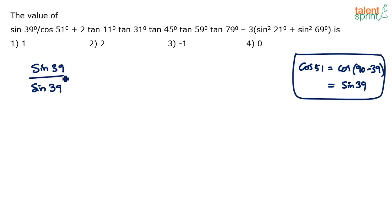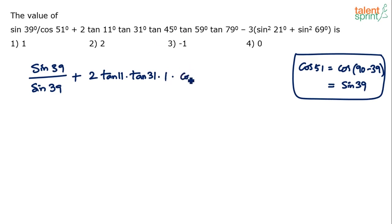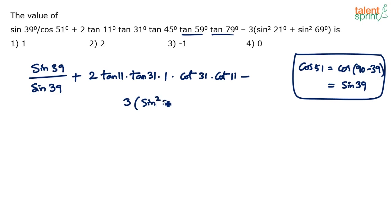You should do this conversion mentally — sin39 and sin39 cancel, so the first term equals 1. Now for the middle term: tan59 = tan(90-31) = cot31, and tan79 = tan(90-11) = cot11. So we have 2·tan11·tan31·1·cot31·cot11.